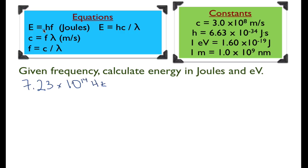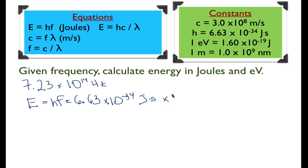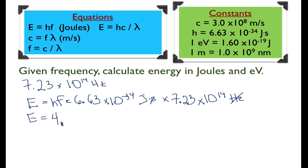Now I'm going to calculate energy using the first equation. H is a constant and I know the frequency, so energy equals HF — Planck's constant times frequency. That's 6.63 times 10 to the minus 34 joule seconds, multiplied by 7.23 times 10 to the 14 hertz. Hertz is 1 over seconds, so seconds cancel, leaving joules. The energy equals 4.79 times 10 to the minus 19 joules.